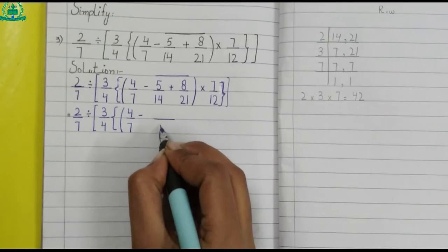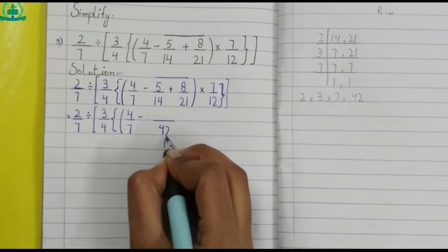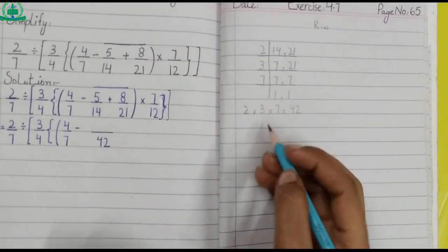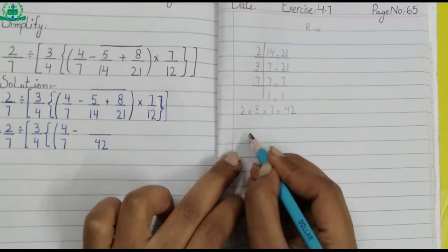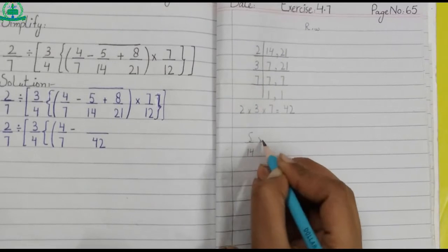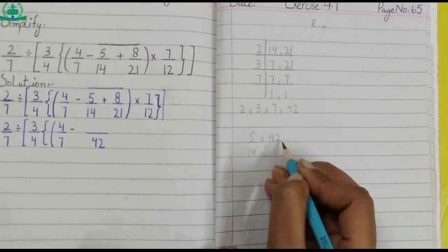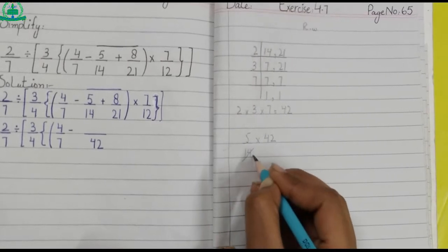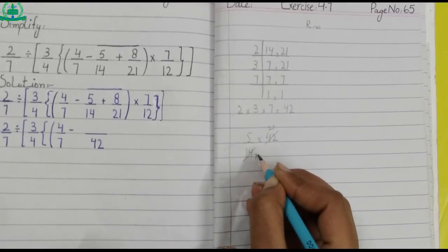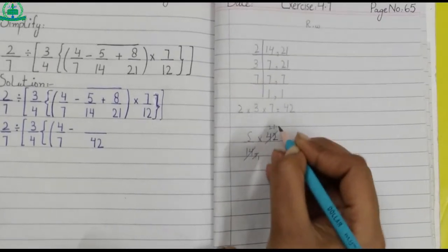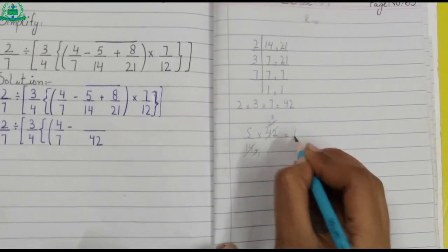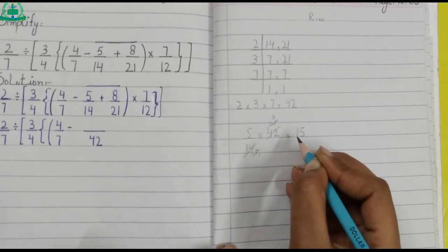So we write 42 in the denominator. We take the first fraction and multiply it with the answer of the LCM: 5 upon 14 multiply by 42. Two sevens of 14, two ones are two, seven seven once a seven, seven seven three is 21. Five multiply by three makes 15, so we write 15 in the numerator.